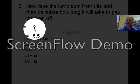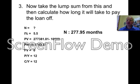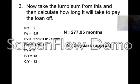So you recalculate for N, and you'll get 277.95 months, which rounds up to approximately 23 years. So instead of taking 25 years to pay off the loan, you only take 23, which is pretty good.